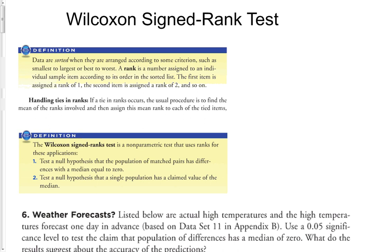Now suppose there's a tie — two data items have the same value. Then what you want to do is find the average of the ranks that would be assigned. For instance, if they were 4th and 5th, you'd average those two ranks, 4 and 5, by adding them and dividing by 2 to get 4.5, and then assign each of those data values a rank of 4.5.